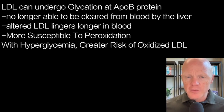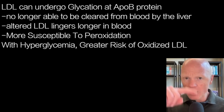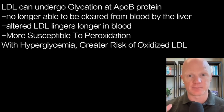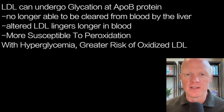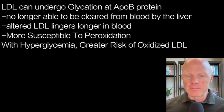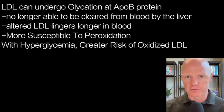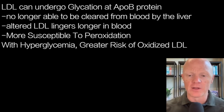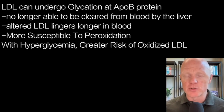LDL can undergo glycation at the ApoB proteins on the lipoprotein. Remember, LDL is a lipoprotein — it has fats, triglycerides, cholesterol, and proteins. Glycation is when glucose — back to advanced glycation end products — binds to these proteins, and it can also bind the lipids. This alters the LDL's structure and function, making it a poor fit for its liver receptors, so it lingers much longer in the blood vessel, and it becomes more susceptible to peroxidation.